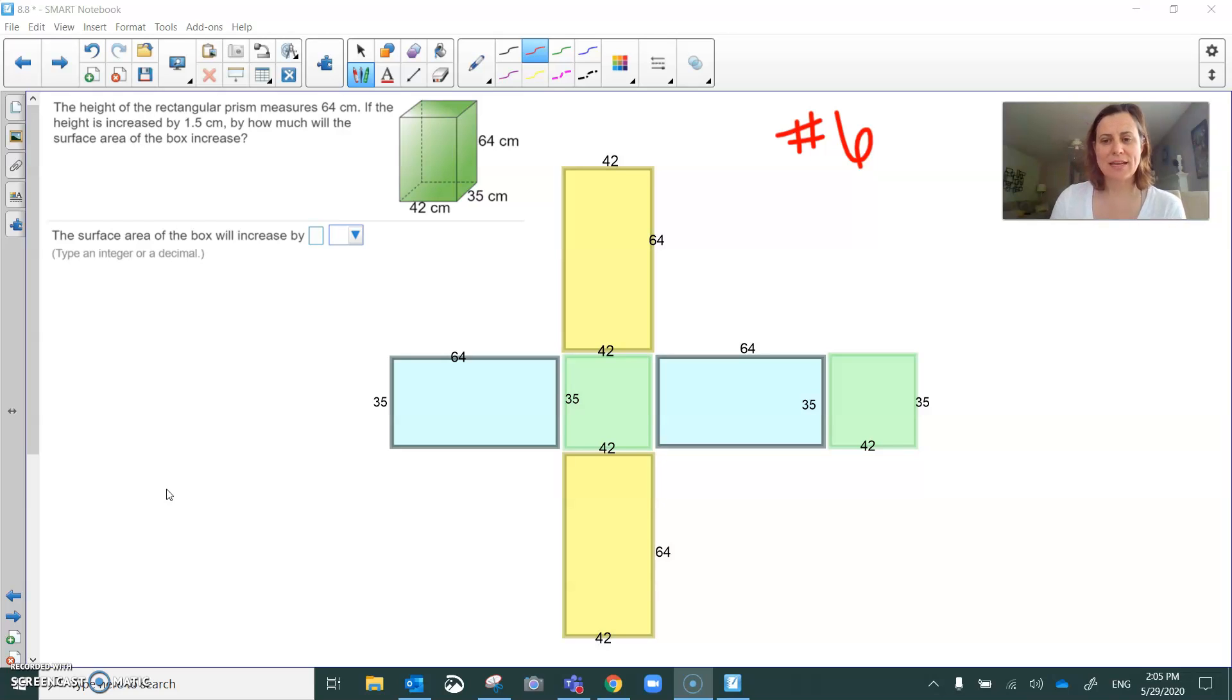So let's start off with the base and the lid. The base and the lid are both rectangles that are 42 by 35. So 42 times 35. So the base and the lid both have an area of 1,470 centimeters squared.